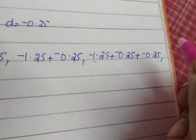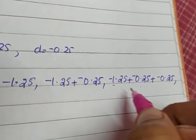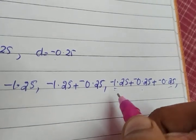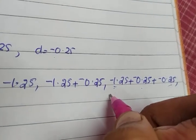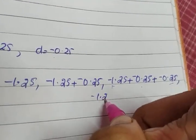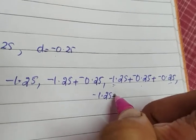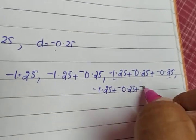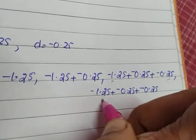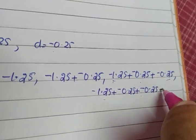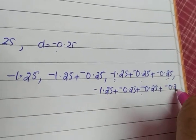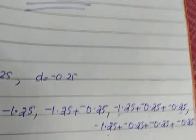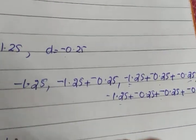The third term gives the value, and for the fourth term, together with the third term we add minus 0.25. So the fourth term is minus 1.25 plus minus 0.25 plus minus 0.25 plus minus 0.25. Let's simplify each term.